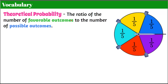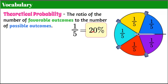So that's in theory — in a perfect world. If I spun this five times, the spinner would stop on each color once. 1 out of 5 is also considered 20%, so 20% of the time I would land on yellow, 20% of the time on blue, and so on and so forth.